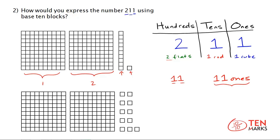And here's the model with two hundreds flats and 11 ones. And notice here that there are 11 ones. And this is different than having one ten and one one, only visually though. It's still the same number. One ten and one one is the same thing as 11 ones. Thanks for watching!